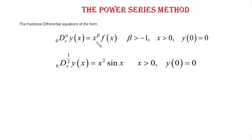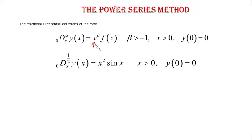But this time I am taking another fractional differential equation with this extra factor x to the power beta. So this is a capital fractional derivative from 0 to x of order alpha of y(x), equal to x to the power beta, where beta is greater than negative 1, times f(x). Like in the previous video, f(x) is the function whose Taylor series representation is valid at x equals 0. We also suppose that the unknown function y(x) to be determined has a power series representation.